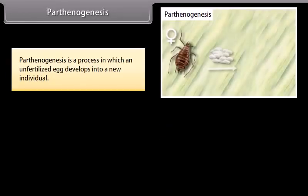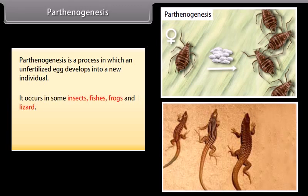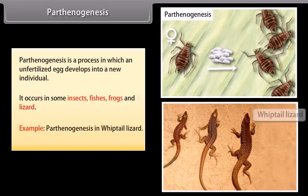Parthenogenesis is a process in which an unfertilized egg develops into a new individual. It occurs in some insects, fishes, frogs, and lizards. Example: parthenogenesis in the whiptail lizard.